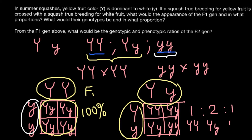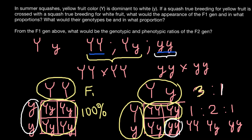The genotypic ratio would be one capital Y capital Y to two capital Y small y to one small y small y. The phenotypic ratio would be three plants with yellow fruits to one with white fruits — a 3:1 ratio. We can also say 75% of plants will produce yellow fruits and 25% will produce white fruits.